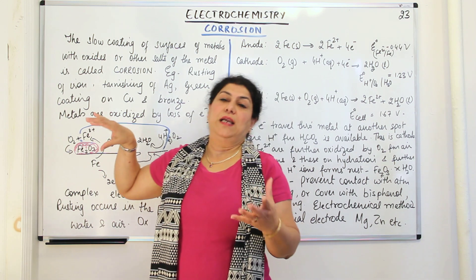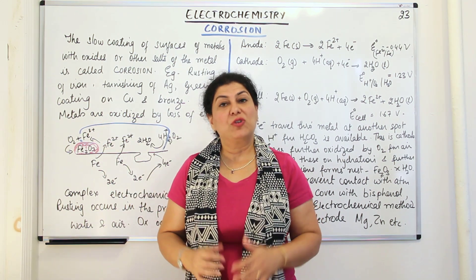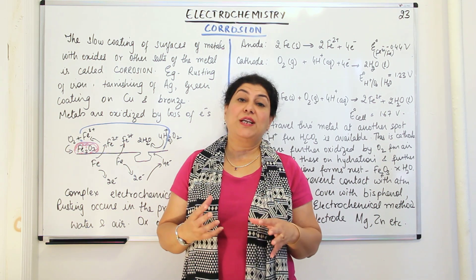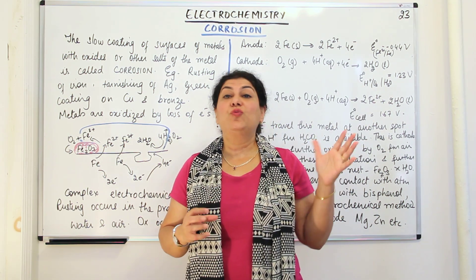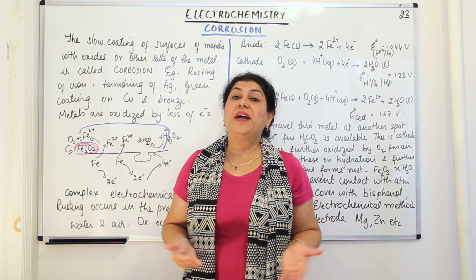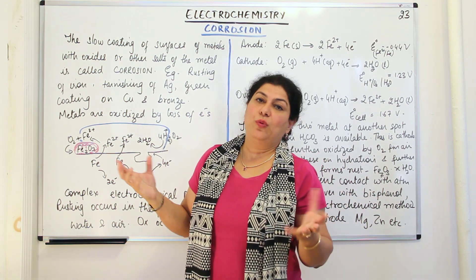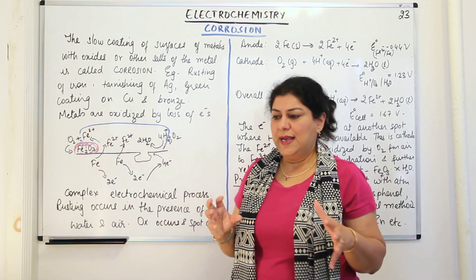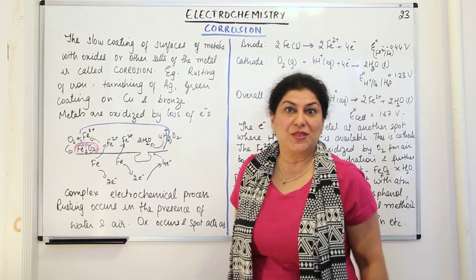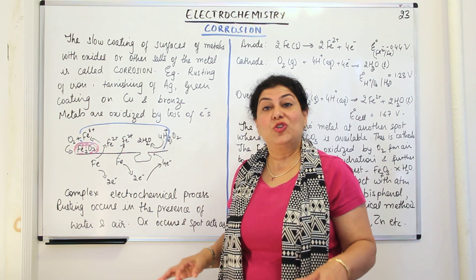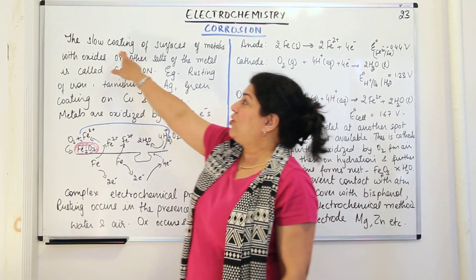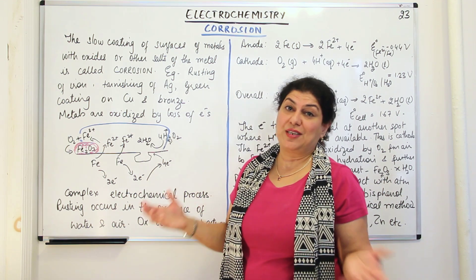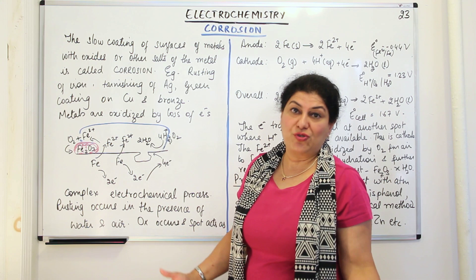How does this corrosion take place? We take the example of rusting because rusting is by far the most damaging corrosion process. Bridges and all construction work mainly uses iron, and rusting of iron makes building structures weak. Many bridges have collapsed simply because the structure got rusted. Why are we studying corrosion in the chapter electrochemistry? Because rusting or corrosion is an electrochemical process. Any redox reaction is an electrochemical process — a chemical process involving the transfer or movement of electrons or charged particles.